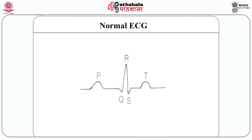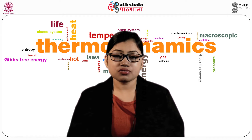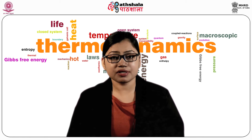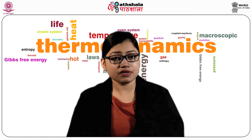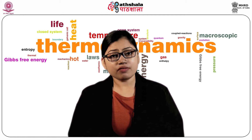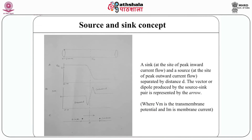Now we are going to talk about the source and sink concept. When an action potential propagates through the muscle, depolarization causes a shift in polarity. When a cardiac fiber is stimulated from point A, the wave of depolarization propagates in the forward direction. The transmembrane potential will tend to become more positive, while the fiber from point B to A will become negative due to repolarization. There is a sink at the site of peak inward current flow and a source at the site of peak outward current flow, separated by a distance d. The vector of the dipole produced by the source-sink pair is represented by an arrow.